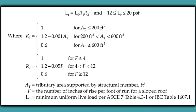For the roof live load, the formula is based on the tributary area and the pitch of the roof. If the pitch is steeper than four inches per foot, that affects the condition, and you calculate the R1 and R2 factors accordingly to get the reduced roof live load L_r. We'll go over this again in the example.